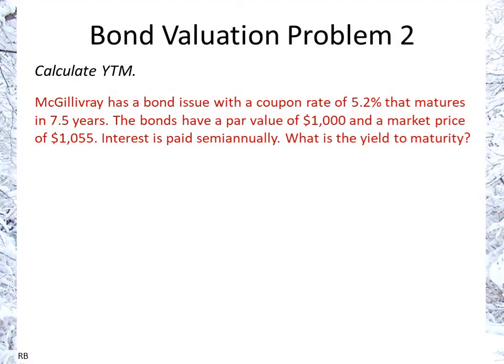Bond Valuation Problem 2. McGillivray has a bond issue with a coupon rate of 5.2% that matures in 7.5 years. The bonds have a par value of $1,000 and a market price of $1,055. Interest is paid semi-annually. What is the yield to maturity?